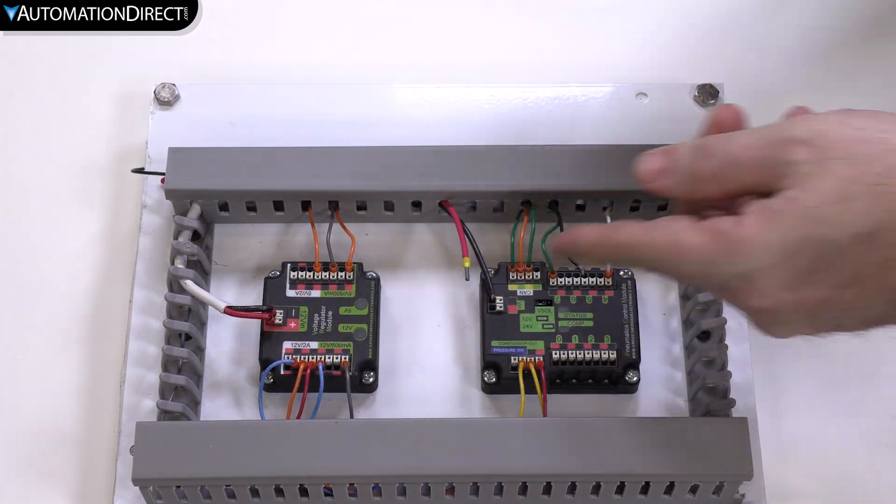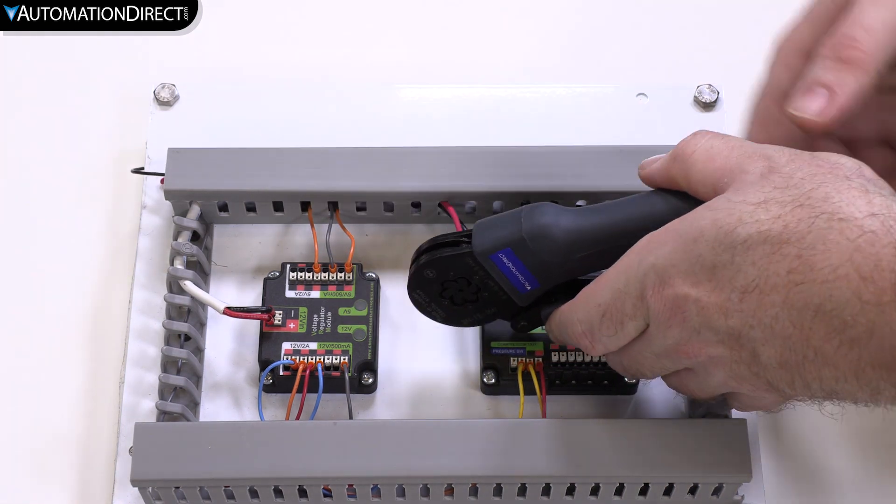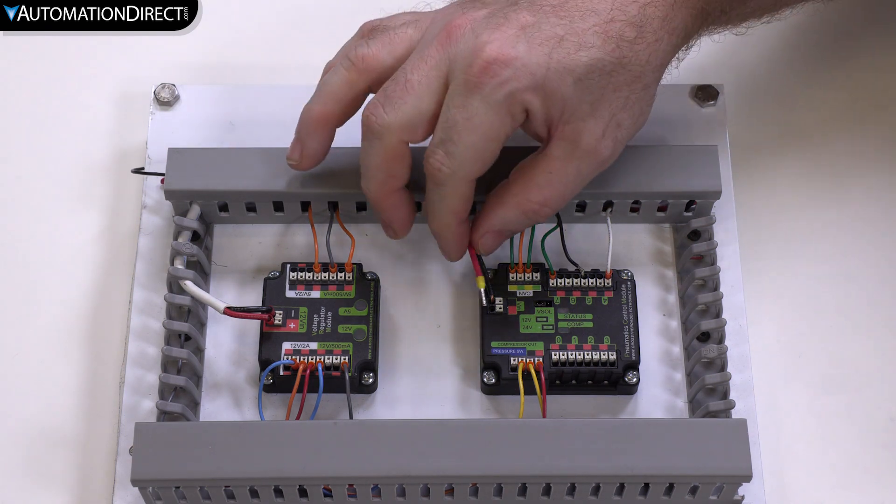Use a proper crimping tool like the one shown here and make sure to only crimp on the metal sleeve and not on the insulation. And there you go.